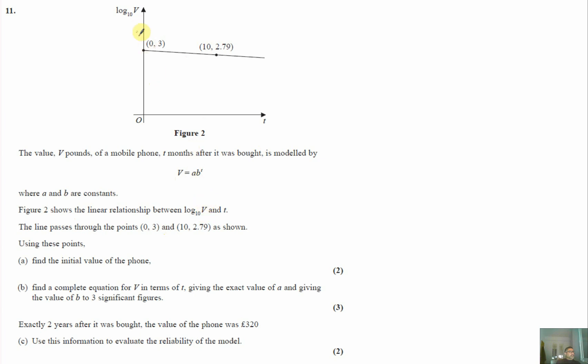But we've been given this Figure 2 where it shows the linear relationship between log base 10 of V and t. The line passes through these points as shown. Using these points, first of all we need to find the initial value of the phone. Now the initial value is when t equals zero.